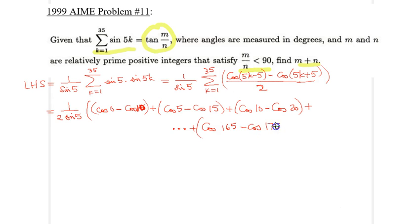And finally, when I plug in 35, I would get cosine of 175, so 170 actually, 170 minus cosine of 180 degrees, 180 degrees.